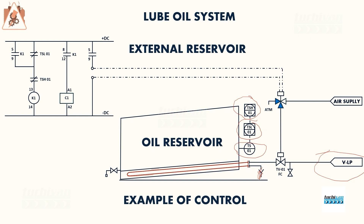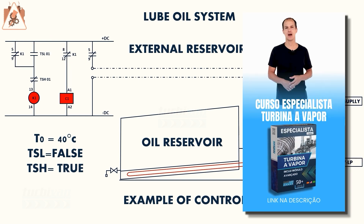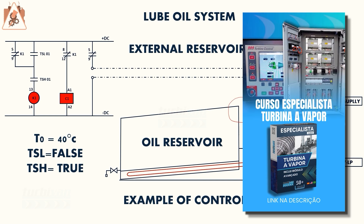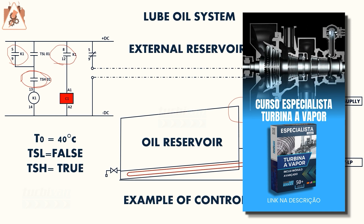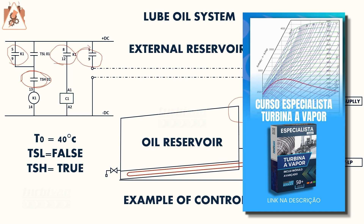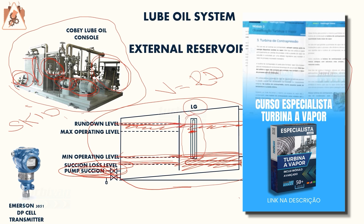Now let's understand the automation electrical diagram. To admit steam, a pneumatic valve called TV is used — it is normally fail-closed, controlled by a solenoid that drains air to atmosphere to keep the valve closed. When K1 is activated, contactor C1 maintains power to the solenoid. When the temperature reaches 40°C, the TSH contact opens, de-energizing K1 and losing the seal on C1, which cuts power to the solenoid.